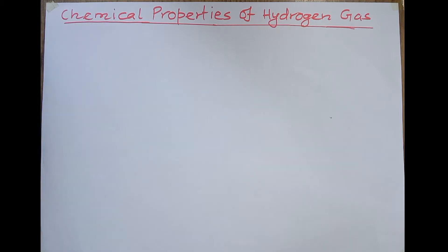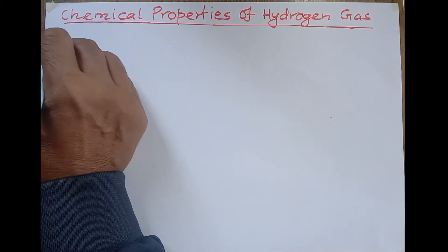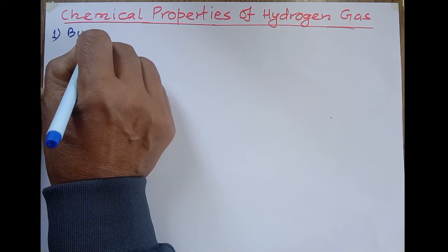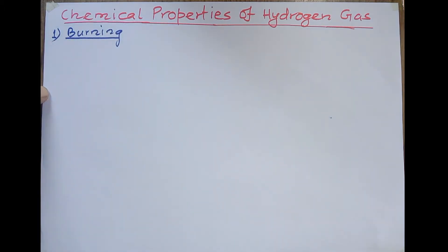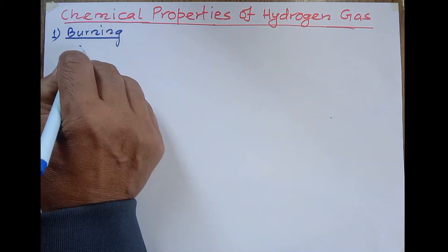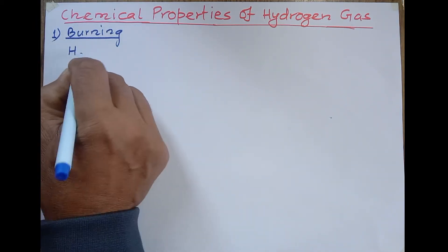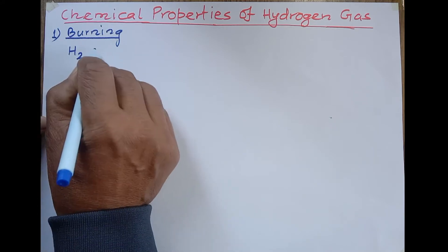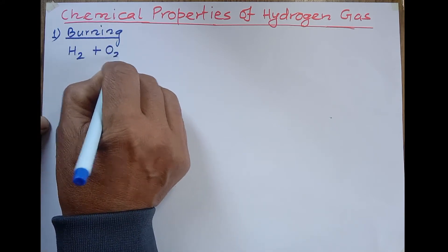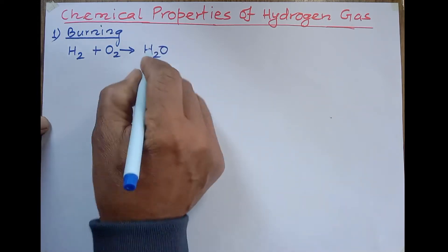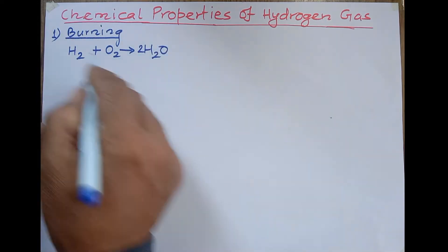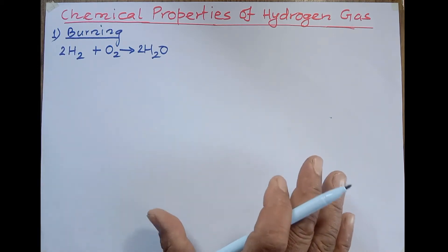First we can say that hydrogen burns in air. Number one, burning. Hydrogen burns in air and it reacts with oxygen to form water. Burning is the process of water formation. Hydrogen when burns in oxygen it forms water, 2H2 + O2 → 2H2O. This is one of the important chemical properties of hydrogen.